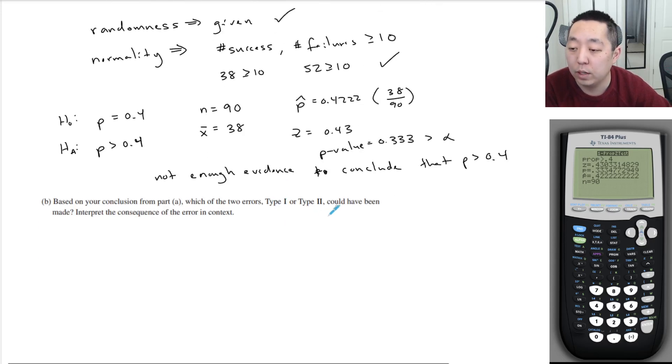Based on your conclusion from part A, which of the two errors, type 1 or type 2, could have been made? Interpret the consequence. The way I like to remember type 1 or type 2 is I remember which one is true. Okay. So we concluded that H0 was true. I know it's not exactly true, we failed to reject. Don't get worked up on the terminology. But in my mind, we basically said HA, we didn't have enough evidence to say the second one is true. So we said this one is true.